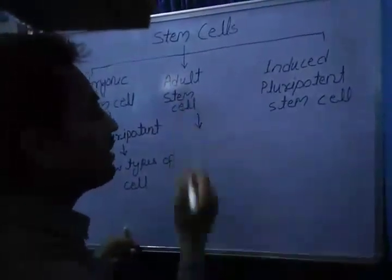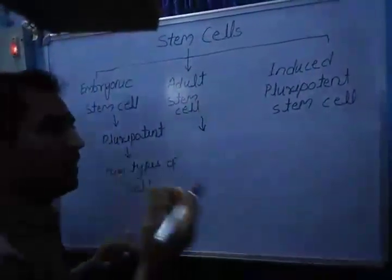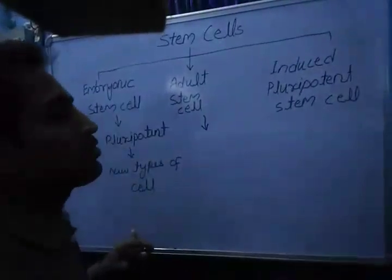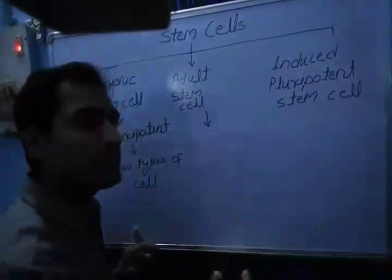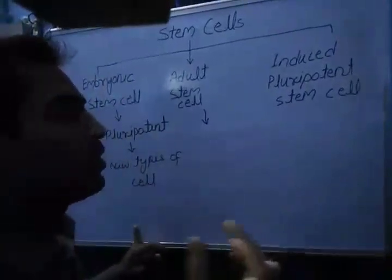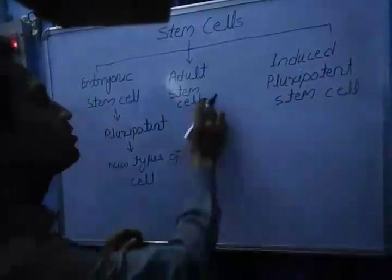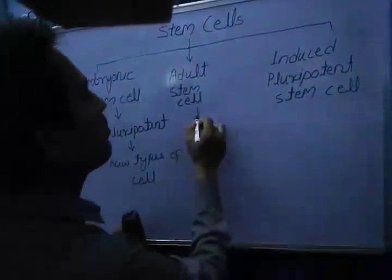For example, our blood stem cells divide to form new blood cells. Our skin stem cells divide to form new skin cells, so it is multipotent.